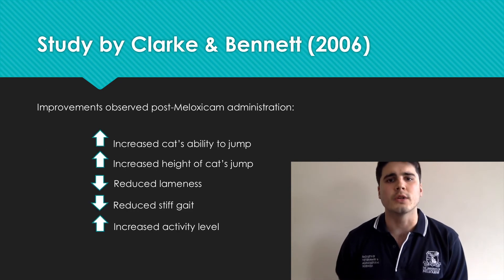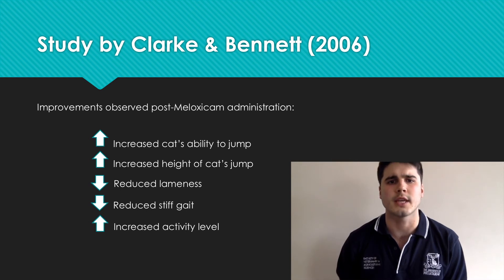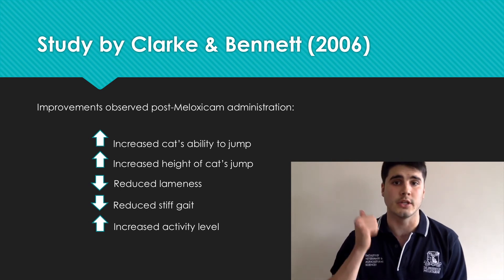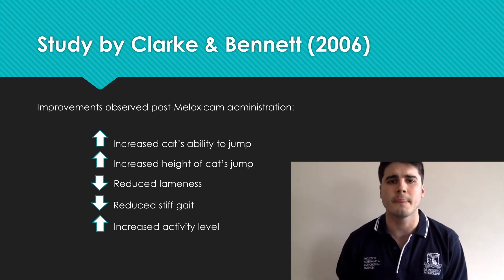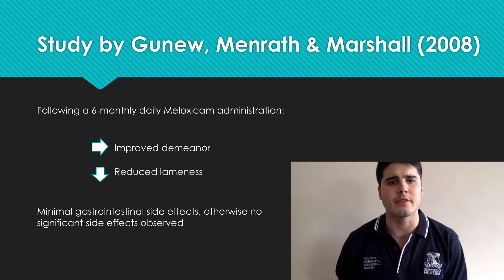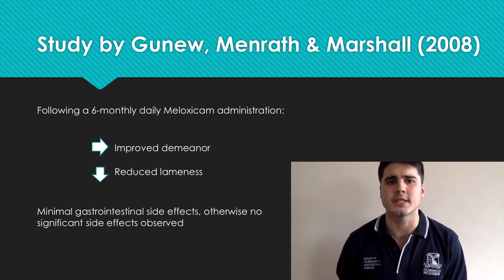The prospective cohort study by Clark and Bennett observed significant improvements in the cat's ability to jump, the height of the jump, lameness, stiff gait, and activity level. The study by Gnu, Menrath, and Marshall further affirmed these findings, with both owners and veterinarians reporting significant improvements in the cat's demeanour and lameness following a six-month daily meloxicam administration course.